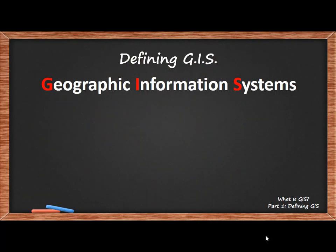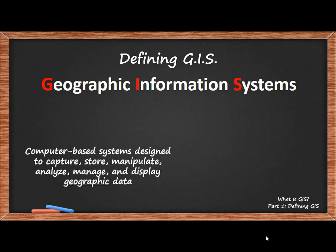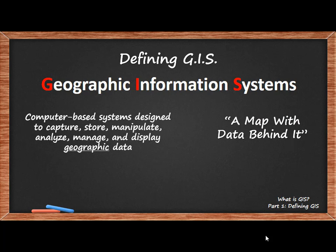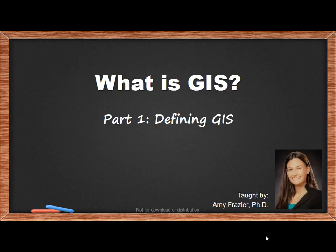So to recap, in this video, we defined GIS as a computer-based system designed to capture, store, manipulate, analyze, manage, and display geographic data — or in other words, a GIS is a map with the data behind it. GIS helps us answer two questions together: where and what, which makes GIS a powerful tool for exploring our world. Lastly, maps in GIS are composed of multiple layers of data, ordered and symbolized so that the information can be visualized and ultimately analyzed together. In part two of this lecture on defining GIS, we will discuss the different components of GIS in more detail. See you next time.